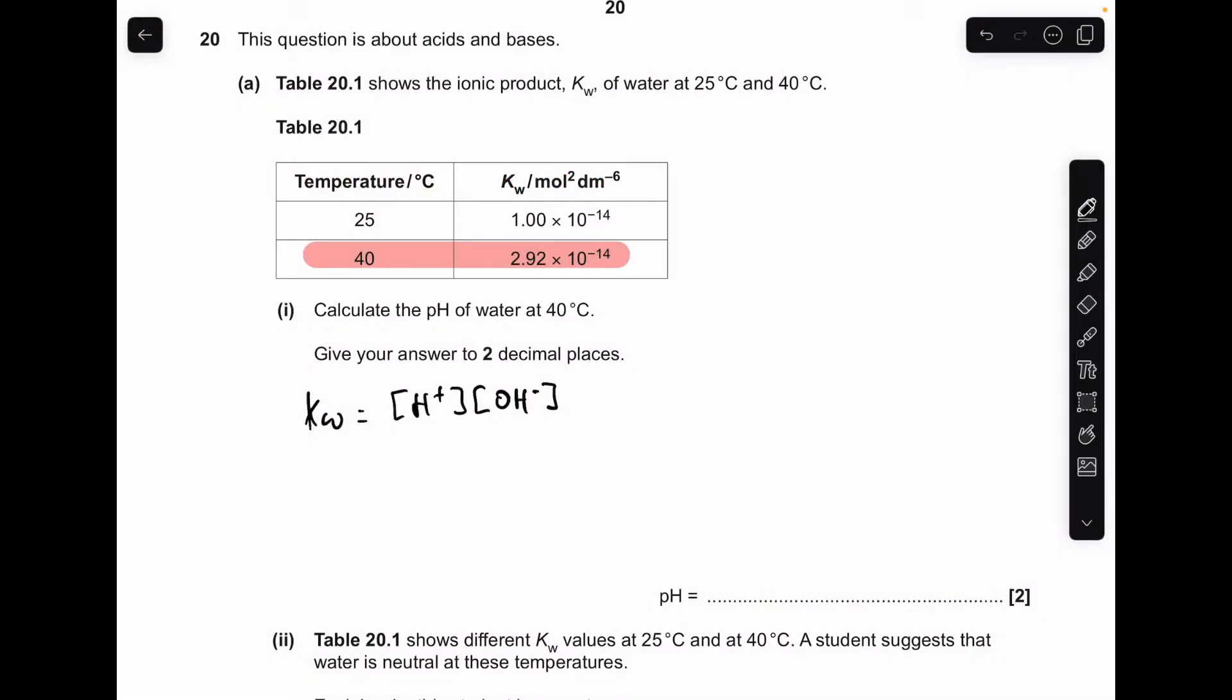Make a start. First part of part A, we've got to calculate the pH of water at 40 degrees C. I've highlighted the KW value for that temperature and also written up the KW expression, which we're going to simplify to KW equals the H plus concentration squared. We can do that because for the water, the H plus concentration and OH minus concentrations are the same.